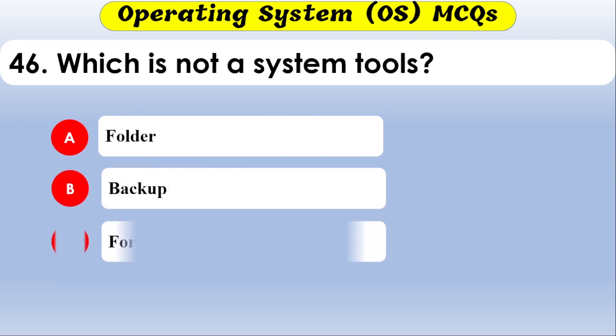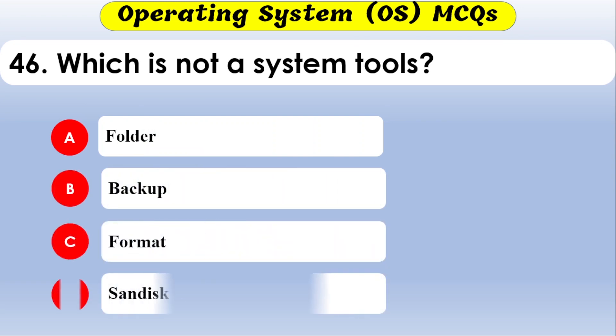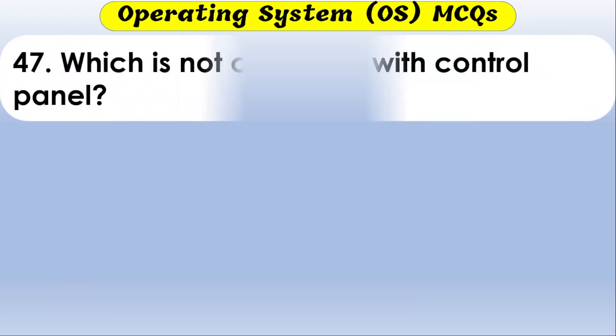Which of the following is not a system tool? The options are folder, backup, format, and scan disc. The correct option is folder — folder is not a system tool.